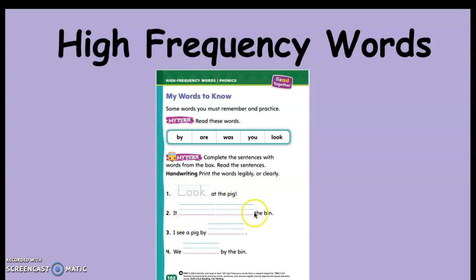So you need to pick the word that completes the sentences best. The first one's already done for you. It says look at the pig, so you already used the word look. You could draw a line through it. But make sure you are tracing it since it's there. The next one says it blank blank the bin. Which word makes sense? It was by the bin. That's a complete sentence, it makes sense, right? If something is sitting by the bin. The last two you're going to figure out on your own.